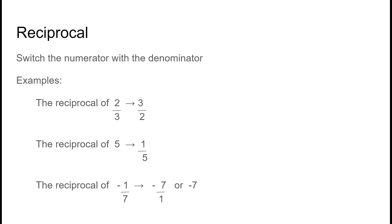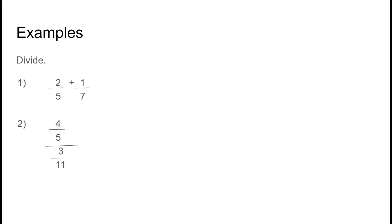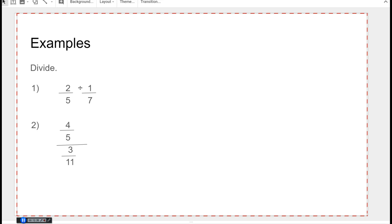The rule when dividing fractions is to multiply the first fraction by the reciprocal of the second fraction. For two over five divided by one over seven: I notice the division sign, so the first fraction stays the same, the division sign becomes multiplication, and I take the reciprocal of the second fraction. Now it's multiplication — two times seven gives 14, five times one gives five. I can't reduce 14 over 5 any further, so that's the answer.